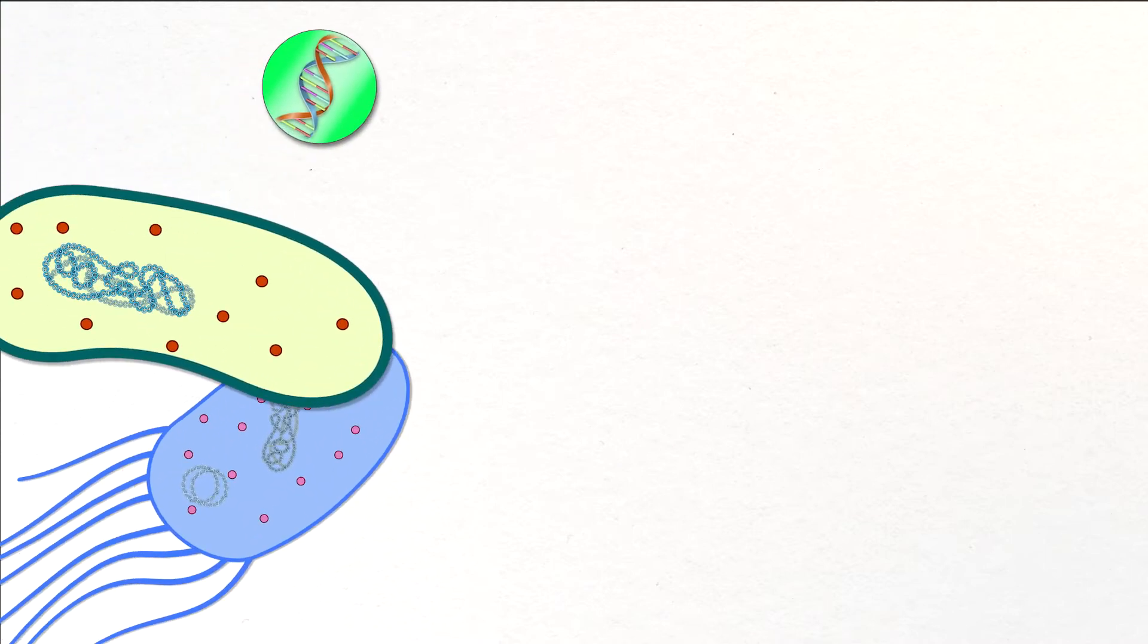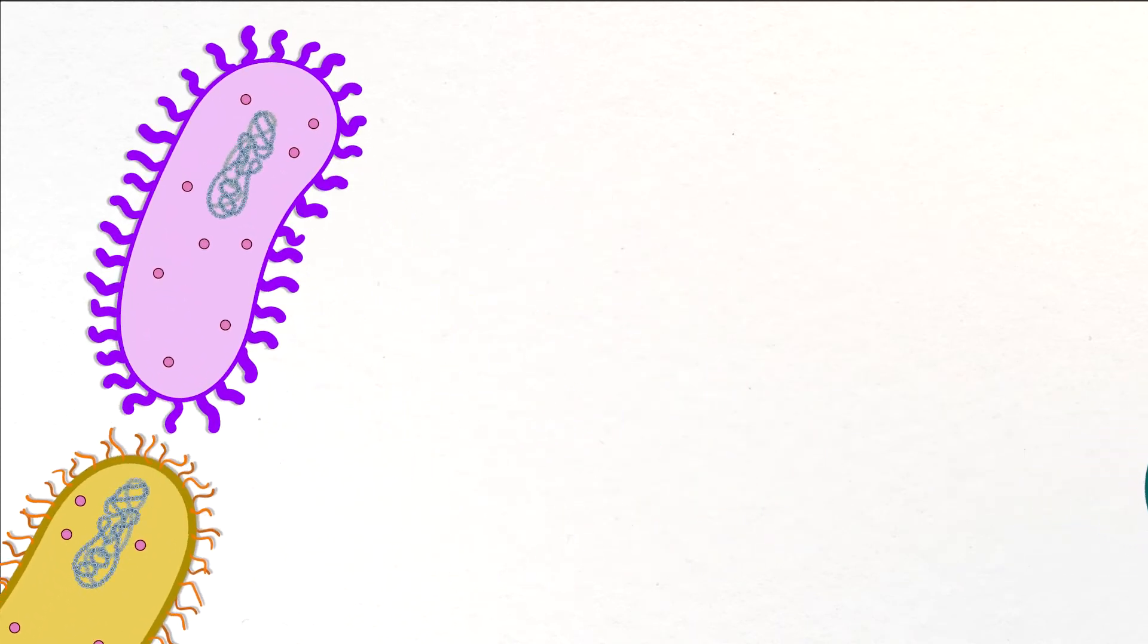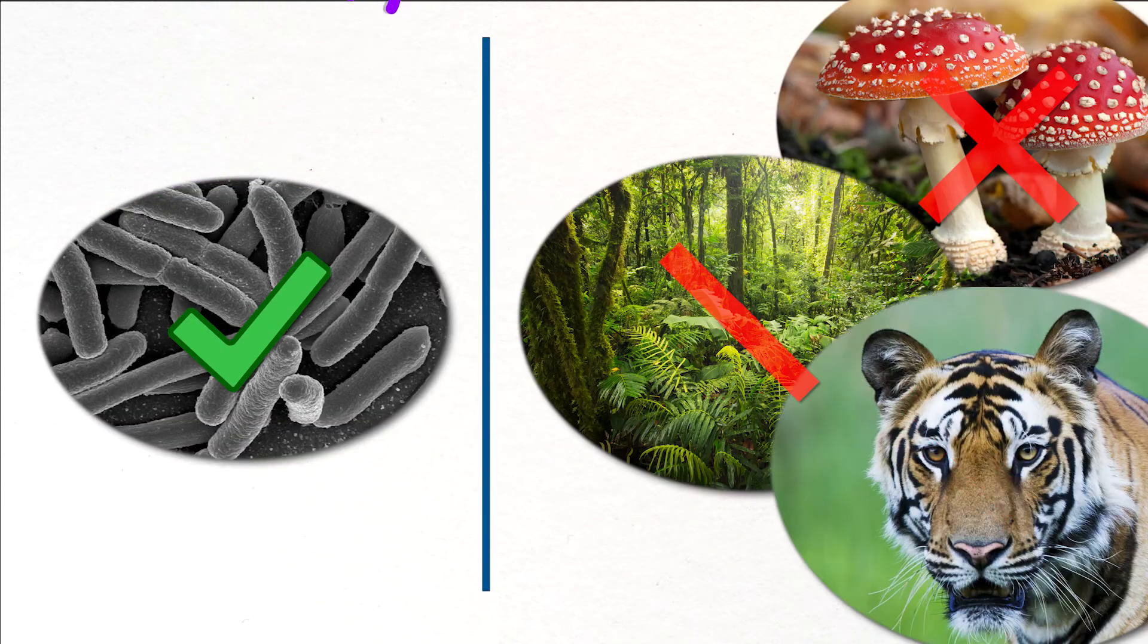So different species of bacteria can horizontally share genes with each other, which is amazing, but this is surely just a bacteria-only thing, right?